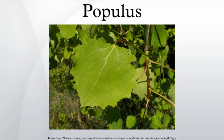Populus is a genus of 25 to 35 species of deciduous flowering plants in the family Salicaceae, native to most of the Northern Hemisphere. English names variously applied to different species include poplar, aspen, and cottonwood.